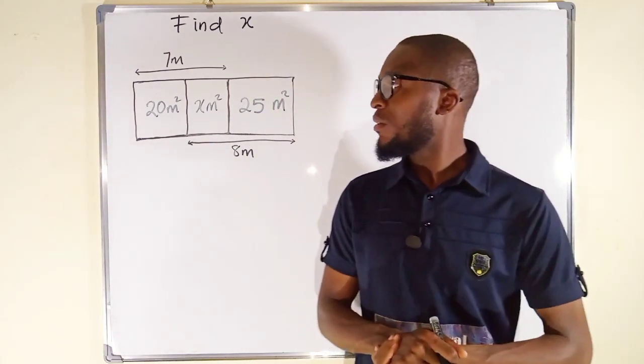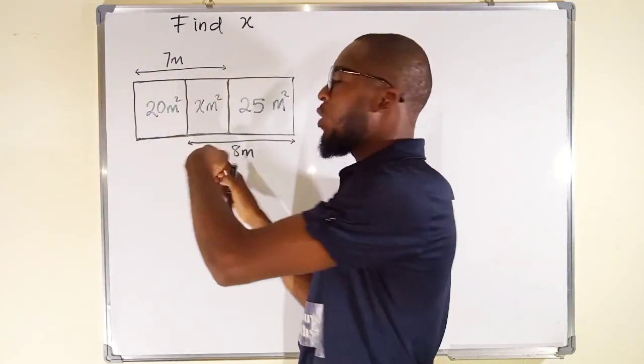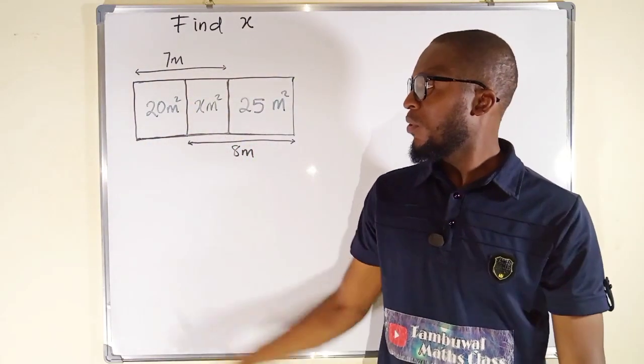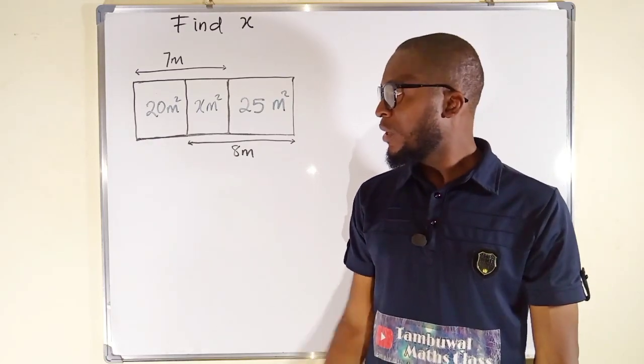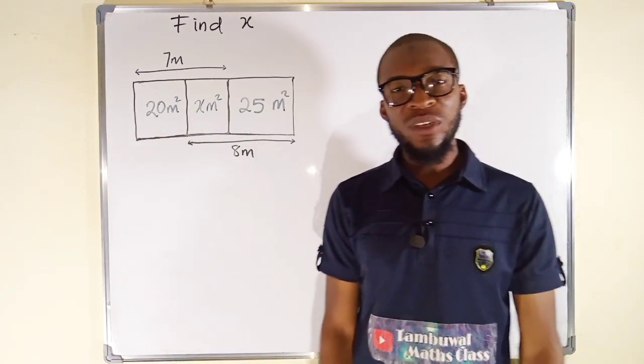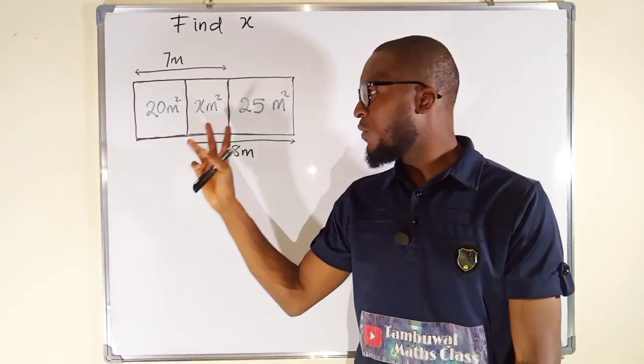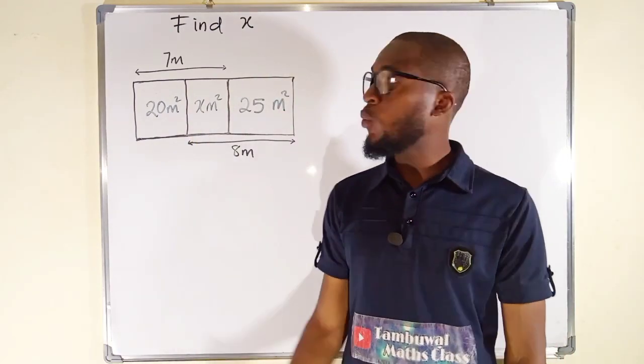It was sent to me since last week. You can see this is a quadrilateral that has been partitioned into three components of different rectangles. The first rectangle has an area of 20 meters squared. The area of the middle rectangle is not given, but we want to find it.